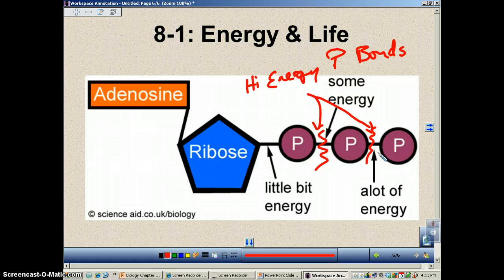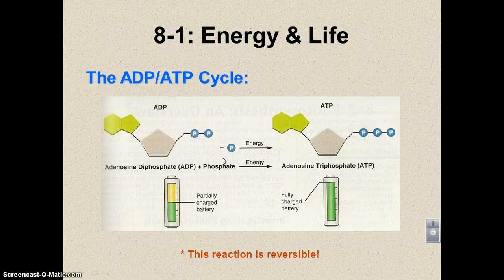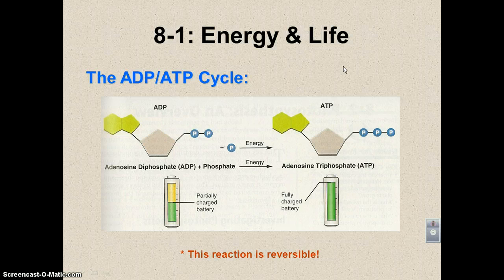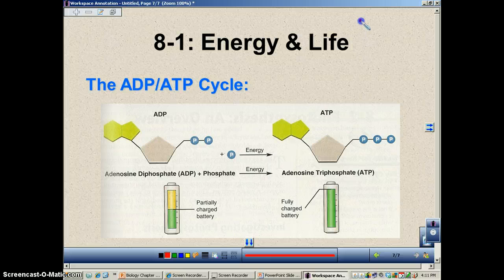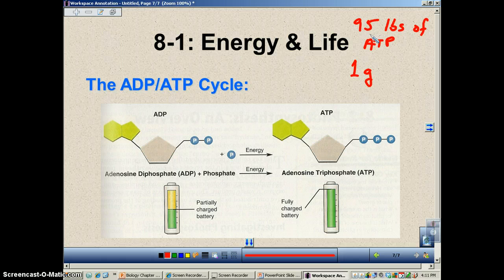If a cell wants to recharge, it just puts the phosphates back on. This is the ADP-ATP cycle, and it's a reversible reaction that happens all the time. In fact, just to survive a day of doing nothing, you need approximately 95 pounds of ATP to keep you alive every day, yet at any given time you only have about one gram in your body.